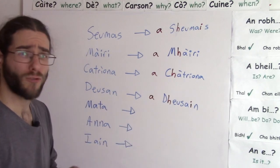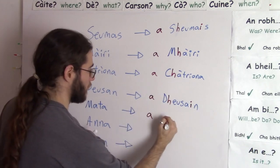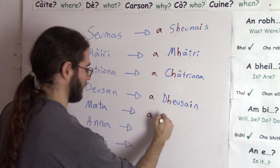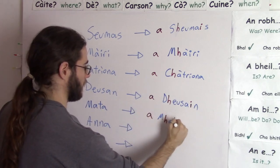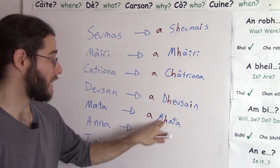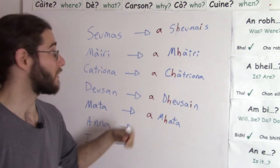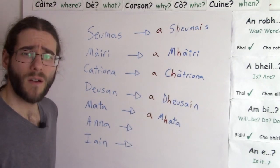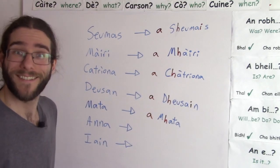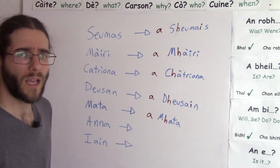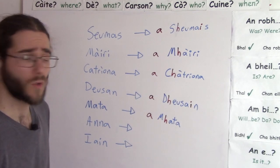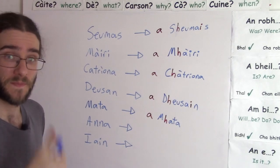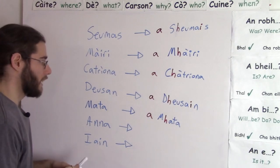Matta — Matthew. How do we talk directly to Matthew? We start with A. There's an H in there. Avata. M-H makes a V — Avata. Like we had with Avari. Kemera hau Avata. Where are you going on your holidays, Matthew?